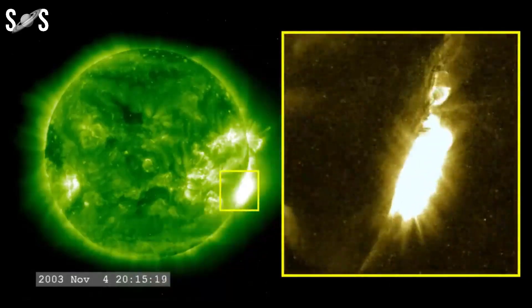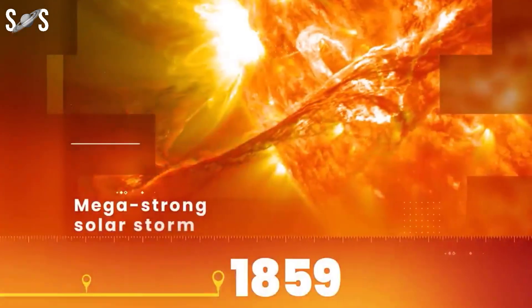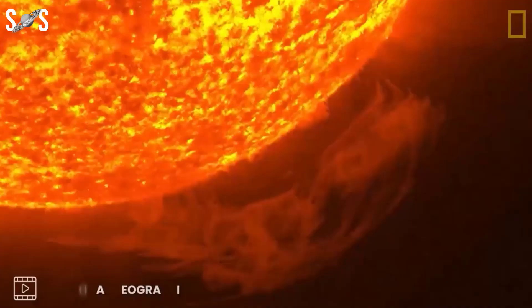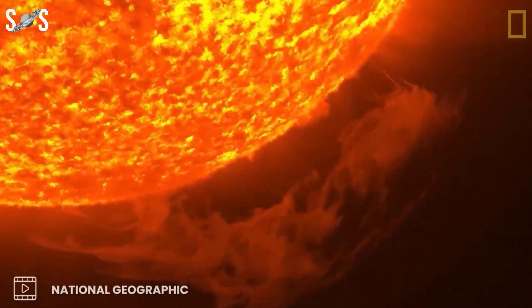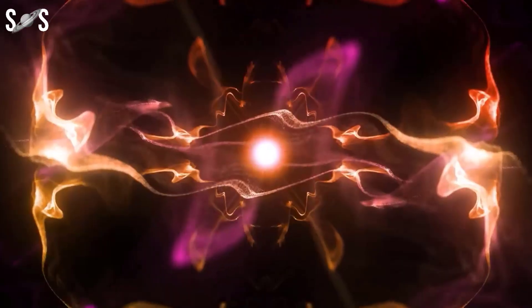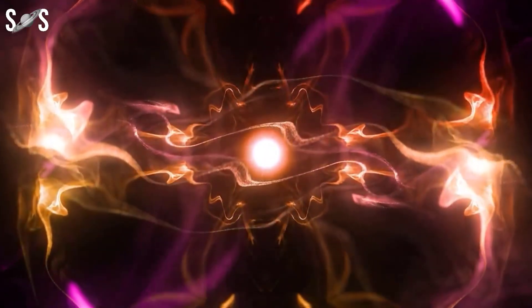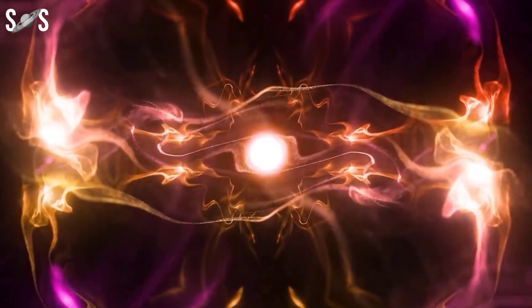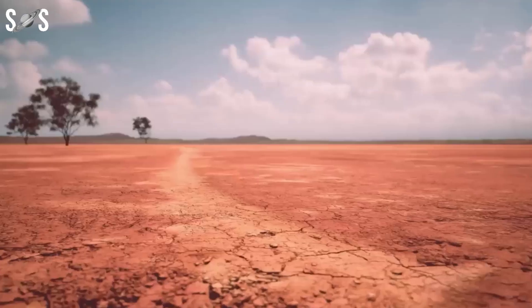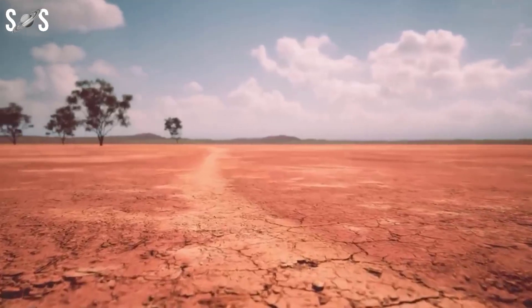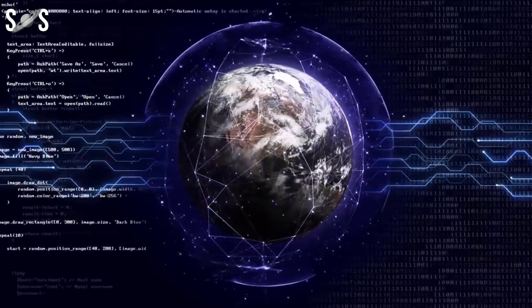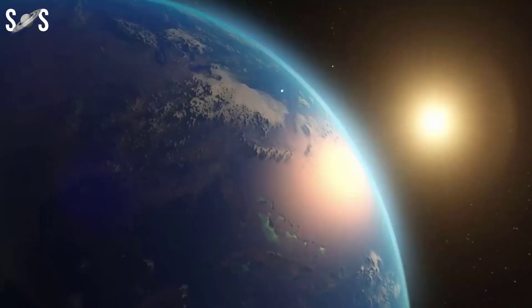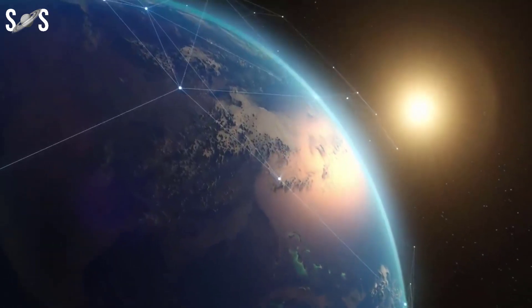The last G-5 geomagnetic storm hit Earth in September 1859. NOAA ranks geomagnetic storms on a scale running from G1, which could cause an increase in auroral activity around the poles and minor fluctuations in power supplies, up to G-5, which includes extreme cases like the Carrington event, a colossal solar storm that occurred in September 1859 which disrupted telegraph systems.